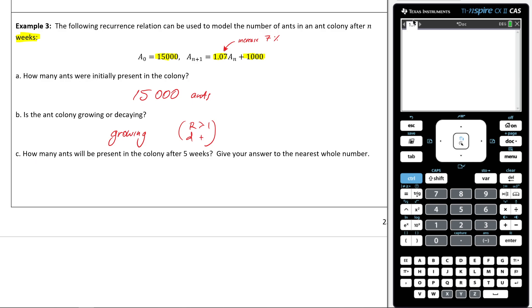It says, how many, and this is where I'm going to get my calculator out. How many ants will be present in the colony after five weeks? Give your answer to the nearest whole number. This is where I would use my recursion relation. So I would say, alright, we've got 15,000 ants. Is there too many zeros? That's good. I then am going to times it by 1.07. And I'm going to add 1,000. Then I'm going to go 1, 2, 3, 4, 5.